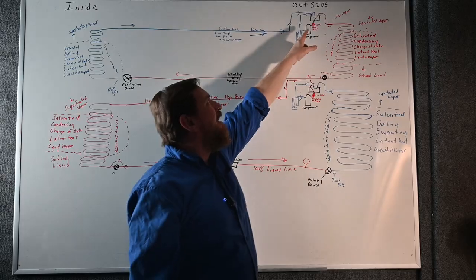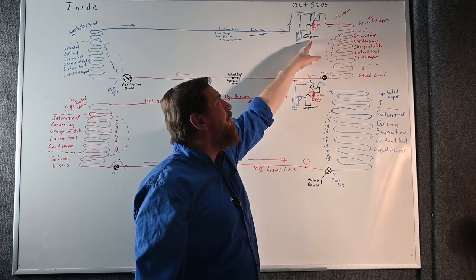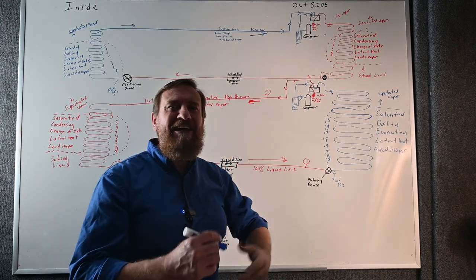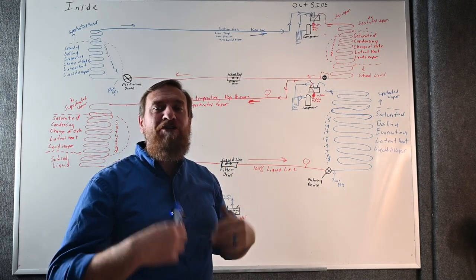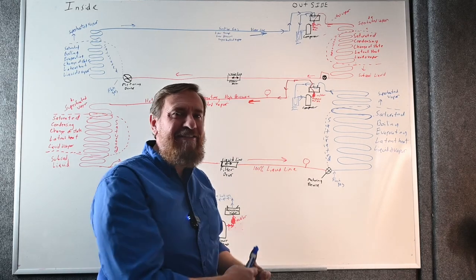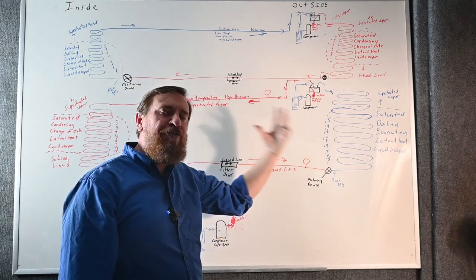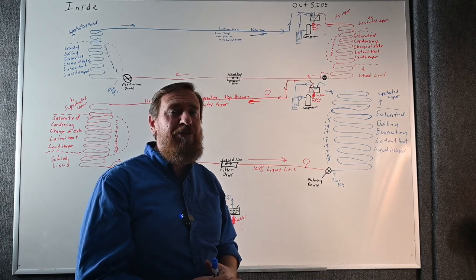So we have the same exact components here. Here we have our true suction port right there, a compressor, and our muffler. It's a little hard to get all those notes written in there. But if you practice it, the more that you write this down, the more that you draw these refrigeration cycles, the easier it's going to come to you.